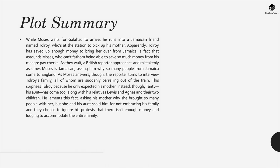While Moses waits for Galahad to arrive, he runs into a Jamaican friend named Tolroy who's at the station to pick up his mother. Tolroy has saved up enough money to bring her over from Jamaica, a fact that astounds Moses who can't fathom being able to save so much money from his meagre paychecks. A British reporter approaches and mistakenly assumes Moses is Jamaican, asking why so many people from Jamaica come to England. When Moses answers, the reporter turns to interview Tolroy's family, who are suddenly barrelling out of the train — surprising Tolroy, who only expected his mother. Instead, his aunt Tanti has come along too, along with his relatives Lewis and Agnes and their two children.